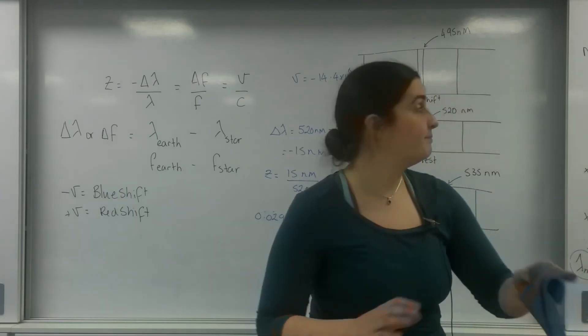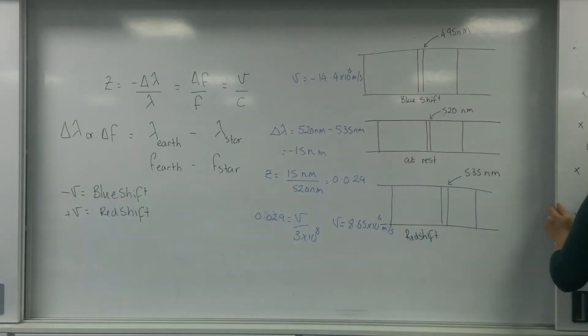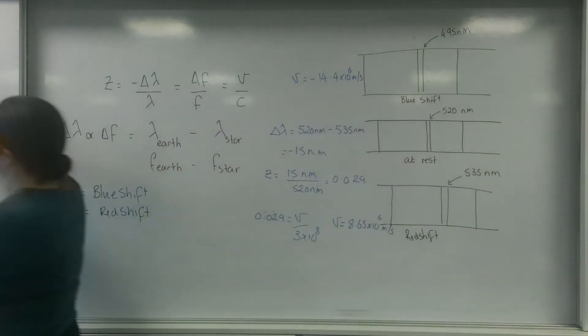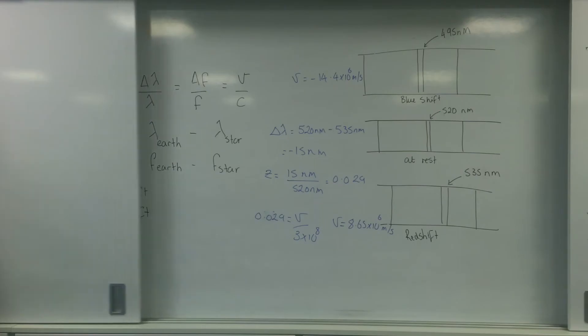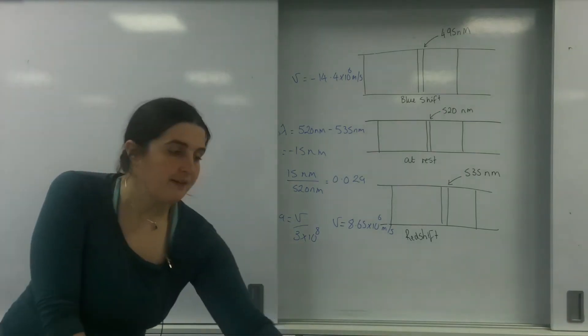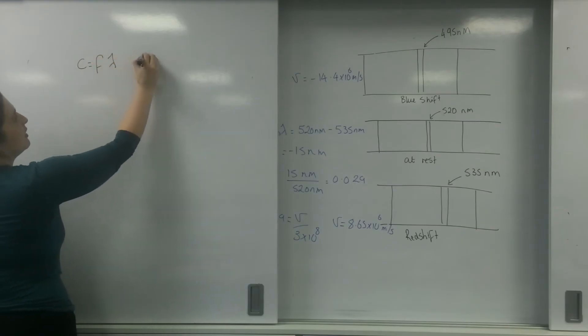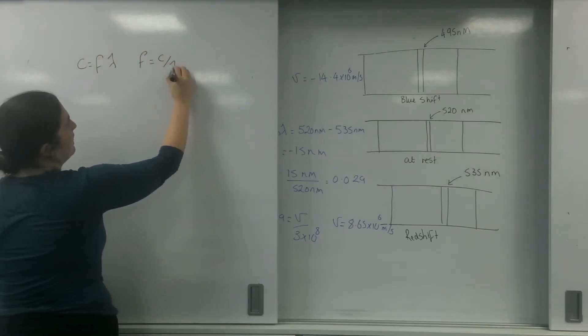Let's have a go. So C equals F lambda. So frequency is C over lambda. Let's work out the frequency for the blue shift one.